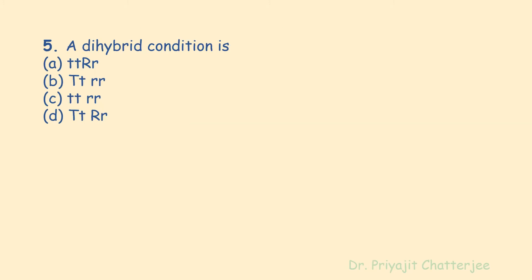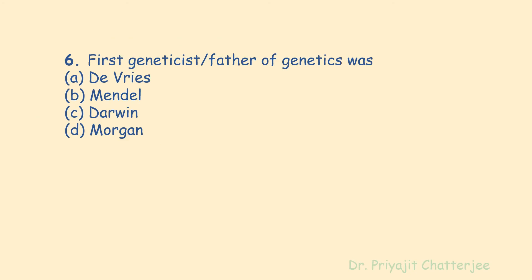The next question: a dihybrid condition is represented by which genotype? Options include: TT RR; Tt RR; tt rr; and Tt Rr. The correct answer is Tt Rr, because a dihybrid involves simultaneous inheritance of two pairs of Mendelian factors. A genetic cross between two different genes with dominant-recessive relationships — Tt Rr — is a true dihybrid scenario, where the organism is heterozygous for two genes, having both dominant and recessive alleles for two different traits.